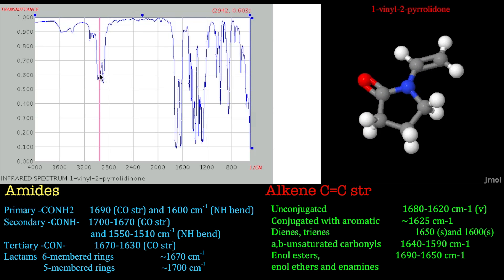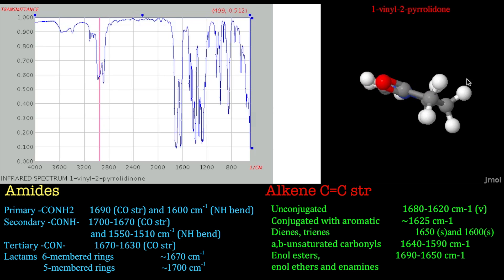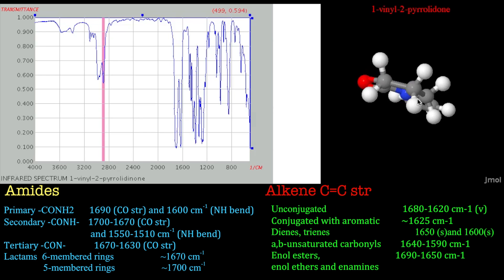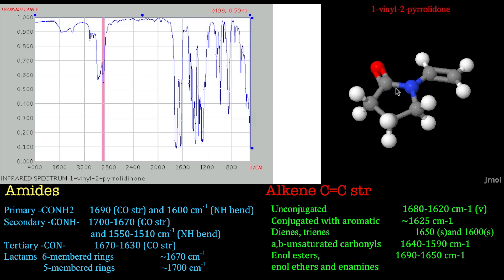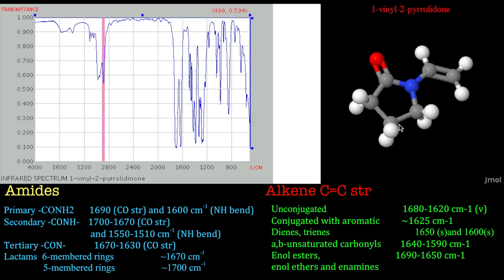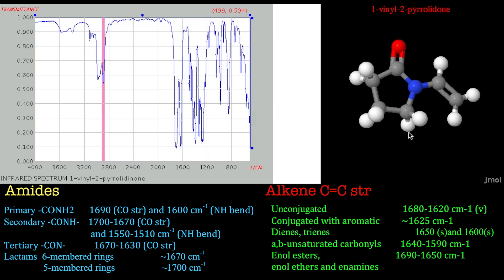What else have we got here? We've got the asymmetric stretches for the CH2s, right next to the symmetric stretches, at slightly lower frequency or lower wavenumber. And this one here is a symmetric stretch but it's next to the amine of the amide, so it comes at slightly lower energy.